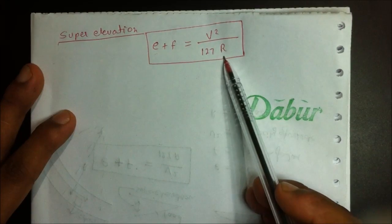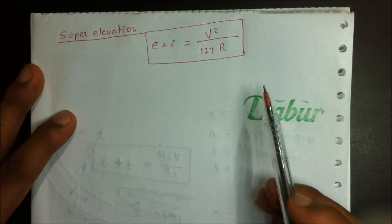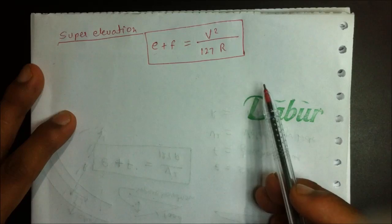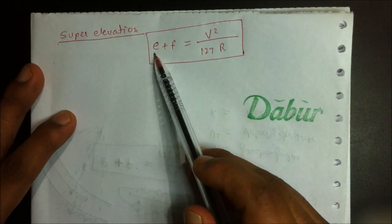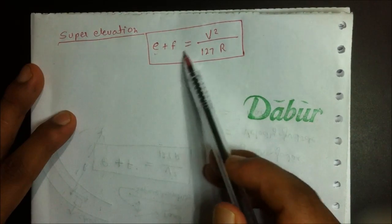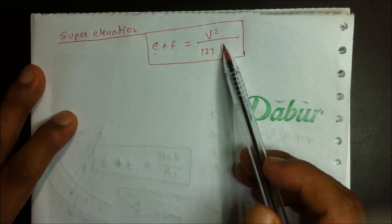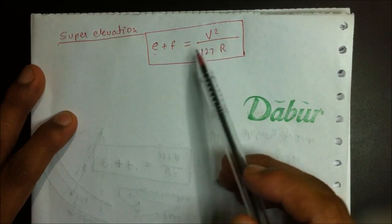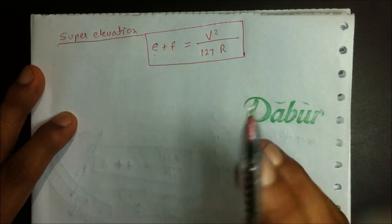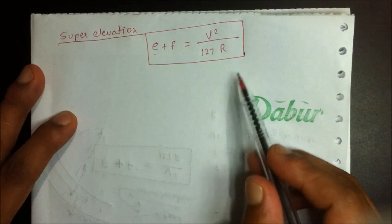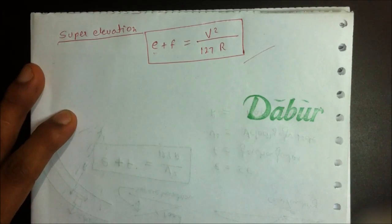The formula E plus F equals V squared upon 127R is only to be used when we are given actual values of E, F, V squared, and 127R — and we have to calculate one single value out of them. Only then will we use this formula.